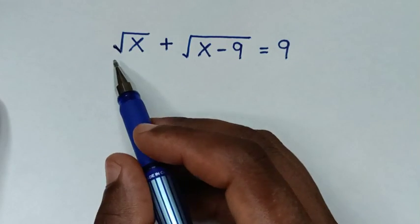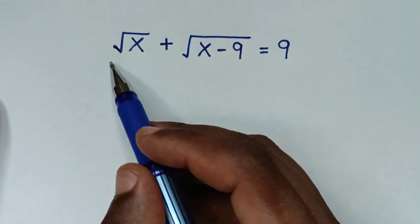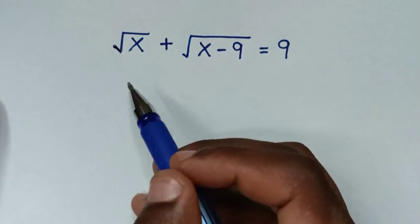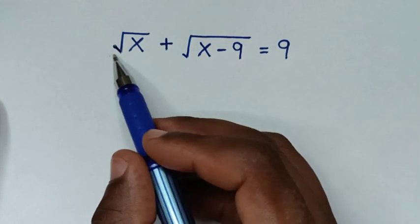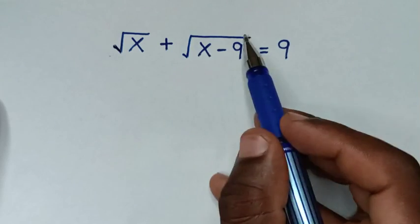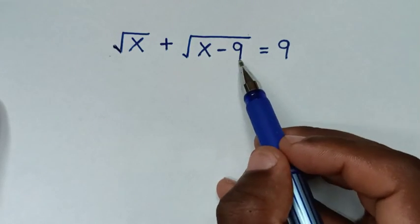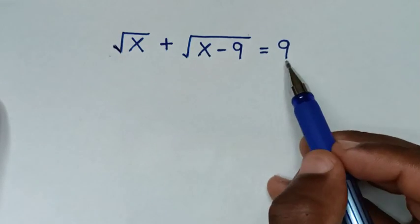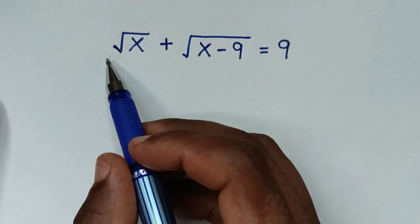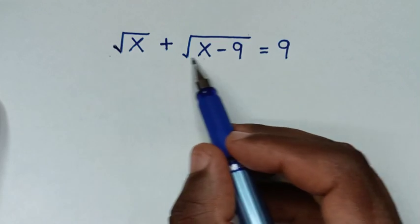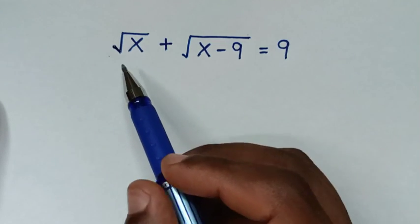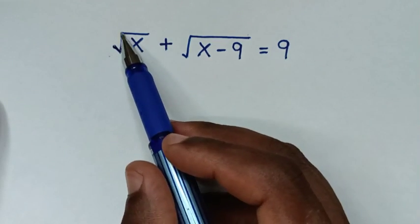Hello, you are welcome to solve this math problem: square root of x plus square root of x minus 9 is equal to 9. We need to find the value of x from this equation.